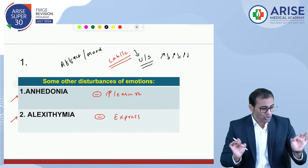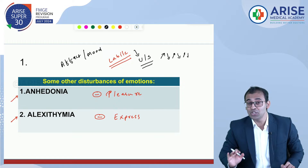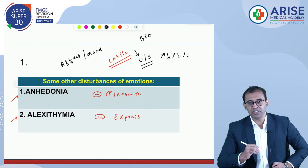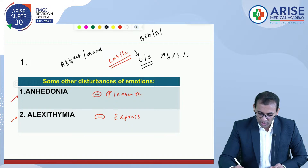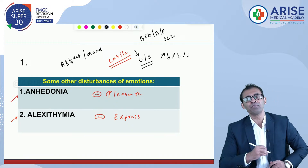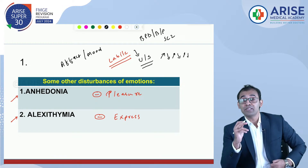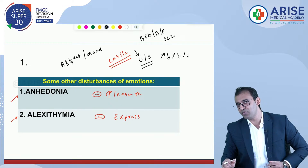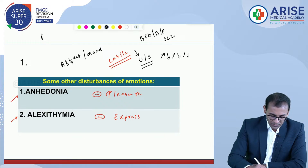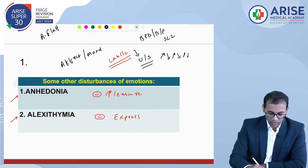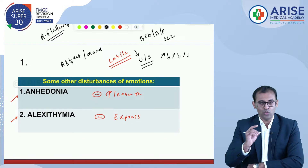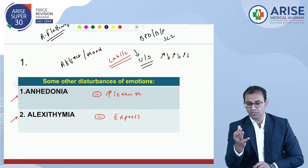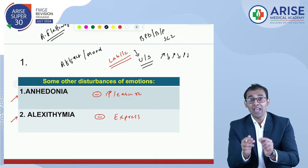Labile emotion can be seen in borderline personality disorder (BPD), bipolar disorder, and schizophrenia. In contrast, when there is no change in a patient's expression at all, that is called affective flattening. The four important terms are: anhedonia, alexithymia, emotional lability, and affective flattening.